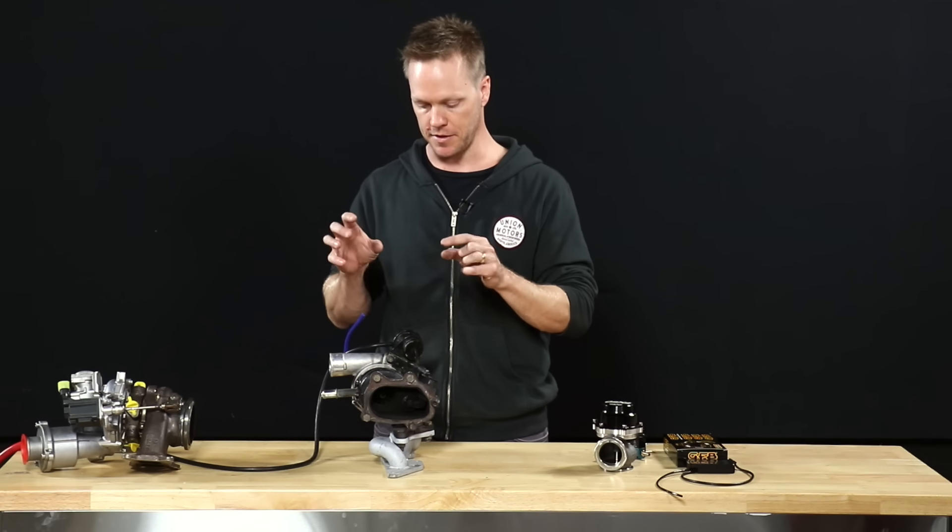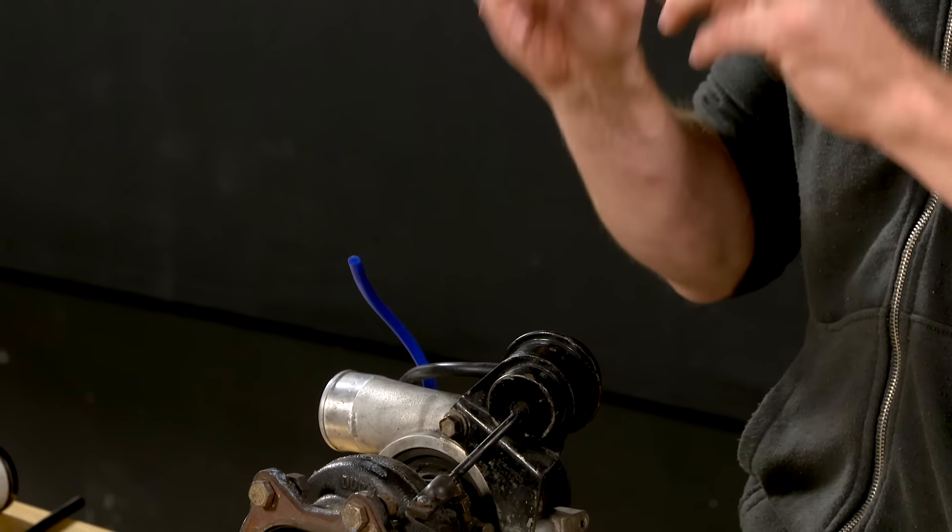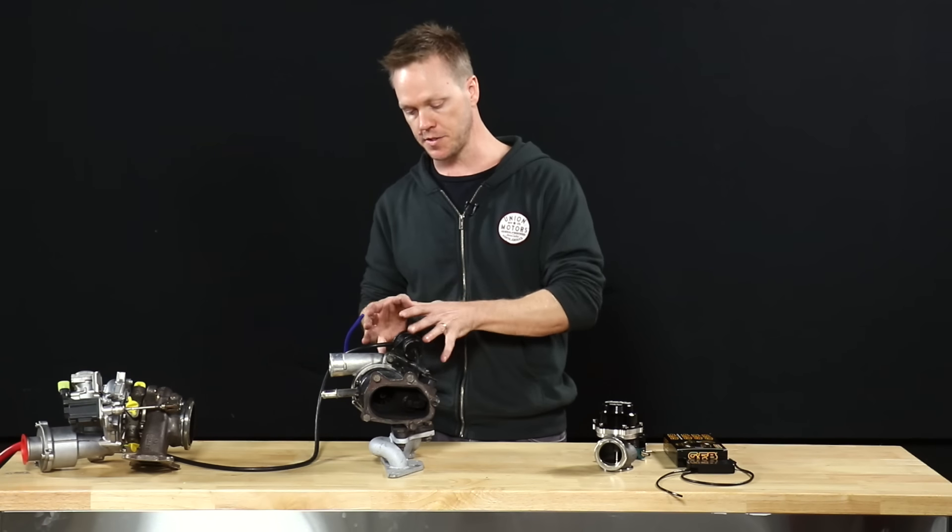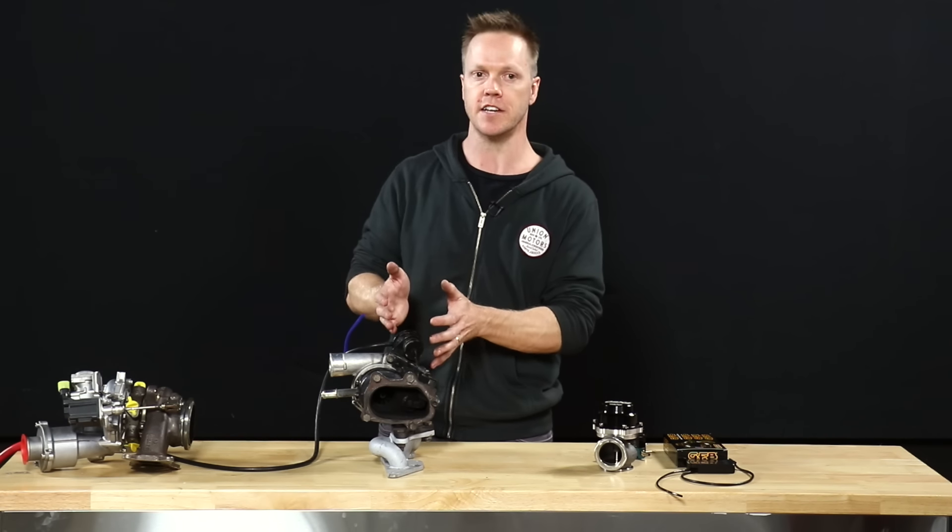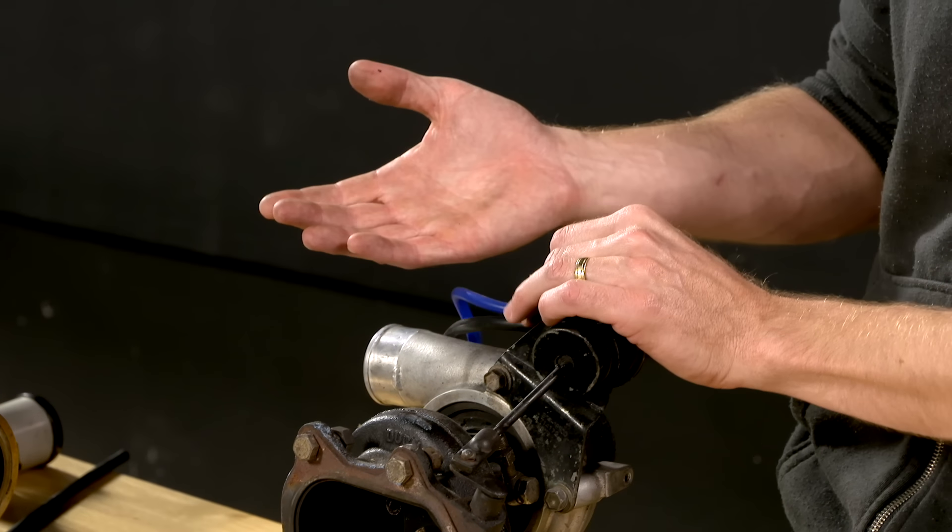Now here's where boost control has come into the whole situation. The spring in this wastegate controls what the base boost pressure is. So on this particular turbo, it's going to be about 7 psi. So if you just connect that straight onto there, you're going to get about 7 psi of boost.